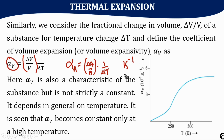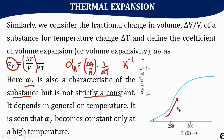The fractional change in dimension — whether it is length, area, or volume — they are unitless quantities. We can observe that alpha V is a characteristic of a substance, but it is not strictly a constant. For a given substance, as we increase the temperature, the value of alpha V also increases, and only at very high temperatures does it become a constant.